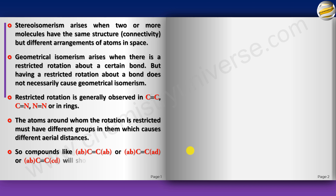Compounds like A,B-C=C-A,B or A,B-C=C-A,D or A,B-C=C-C,D will show geometrical isomerism. However, A,A-C=C-C,D will not — because if this carbon holds both A's, flipping gives the same molecule; the A–B and A–C distances remain unchanged. The second condition required is that both atoms around the restricted bond must carry two different groups. Each carbon of the double bond must have two different substituents.